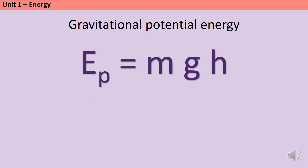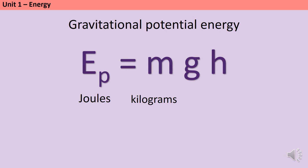As with all of your GCSE physics equations it's important that you use the standard international units for each quantity, otherwise the answer to any calculation you do won't come out as the right size. GPE is a type of energy so as with all energy it's measured in joules with a capital J. Mass is in kilograms and it's very likely that you'll need to convert this from the value given in the question — it's quite usual for the exam board to give it in grams, so watch out for that.